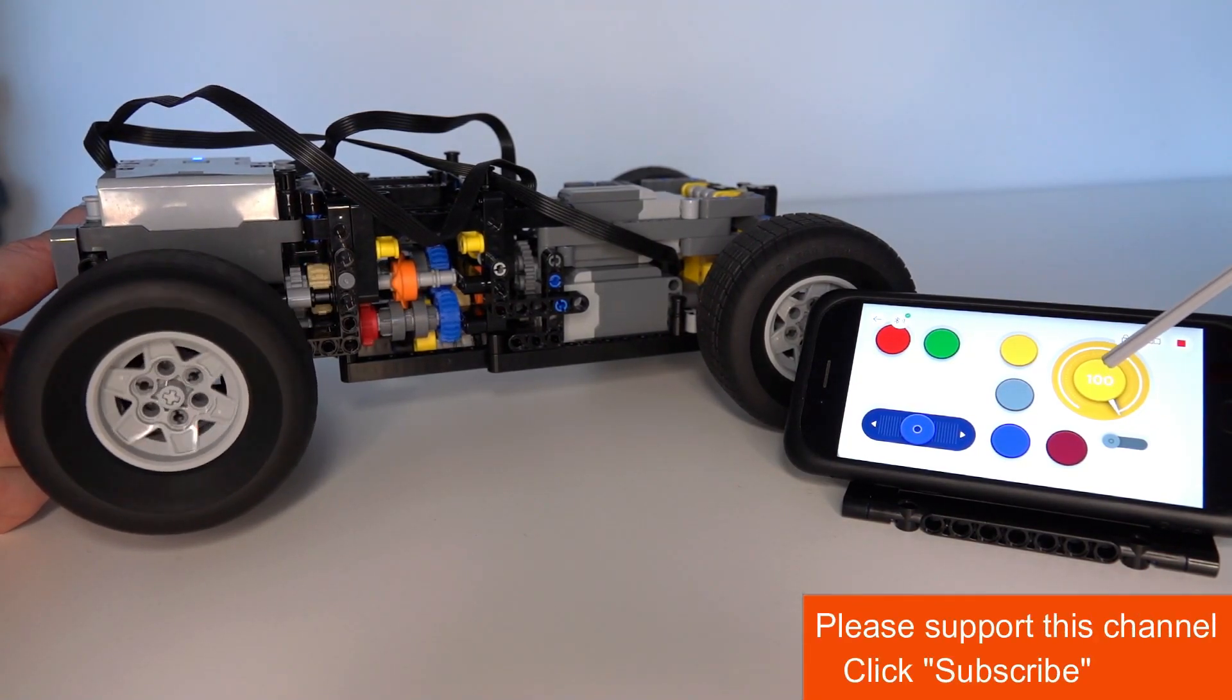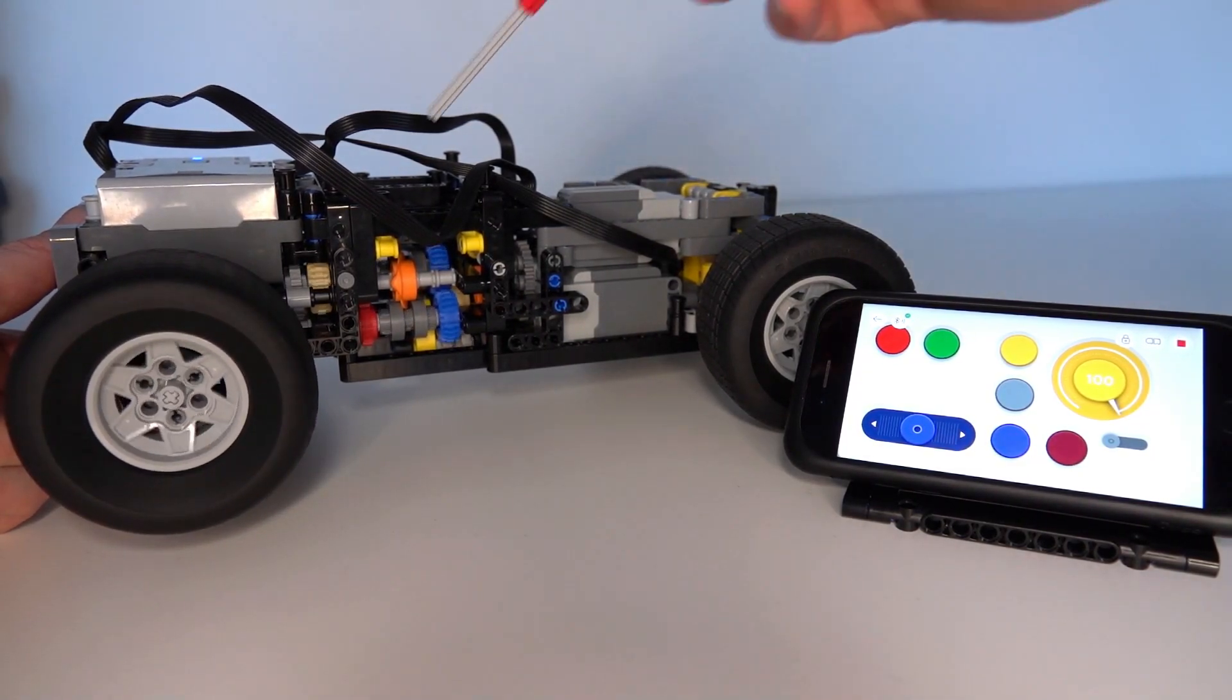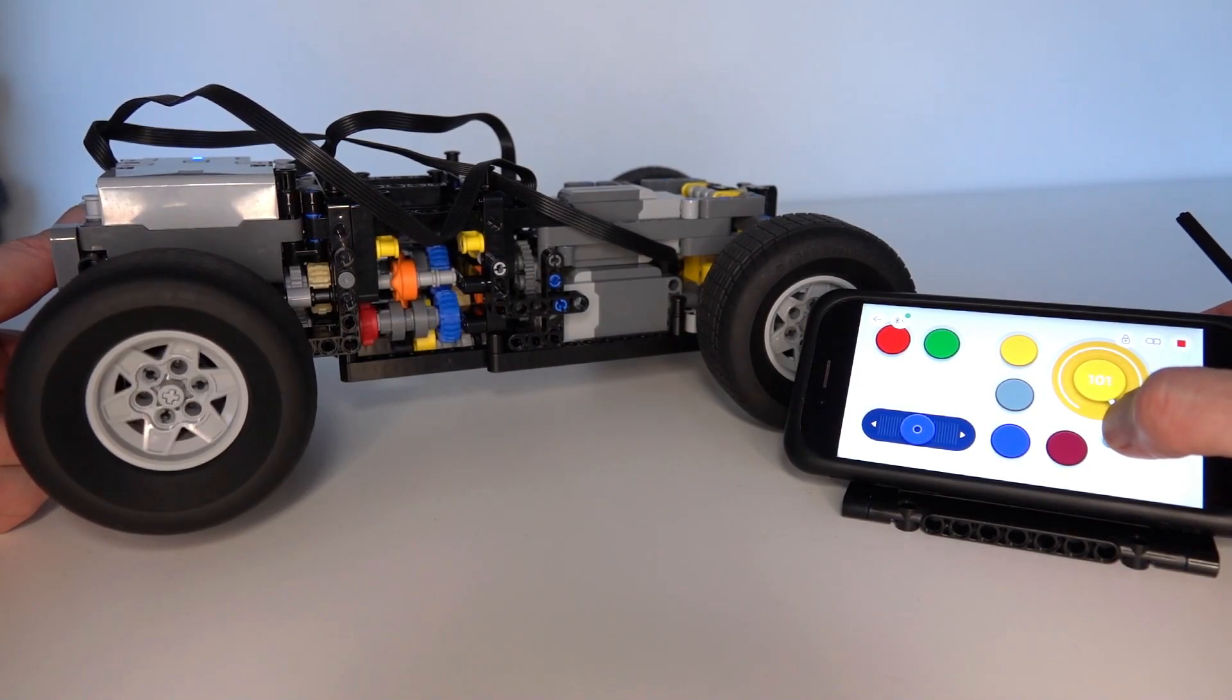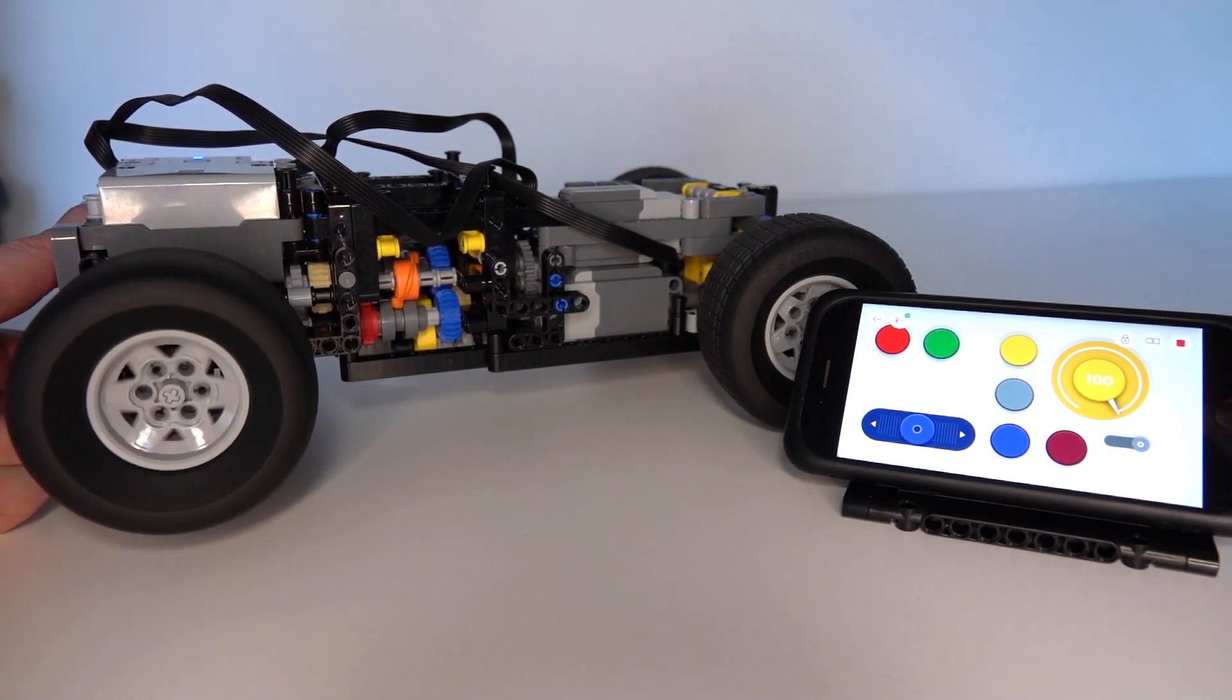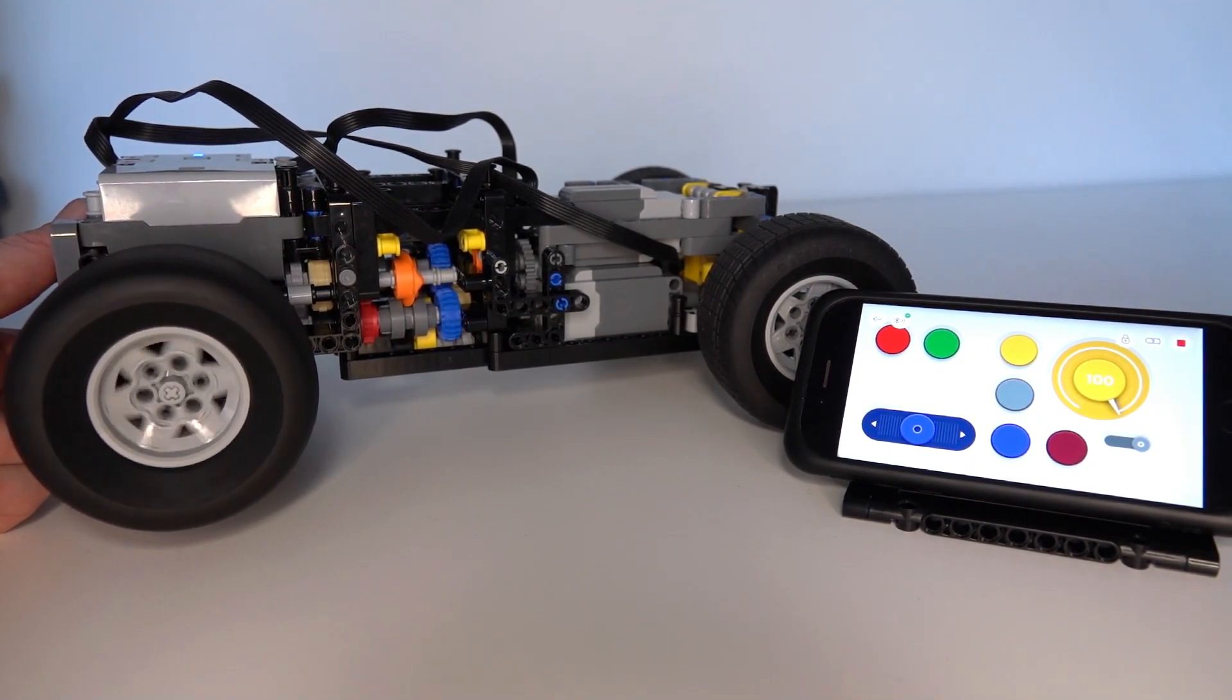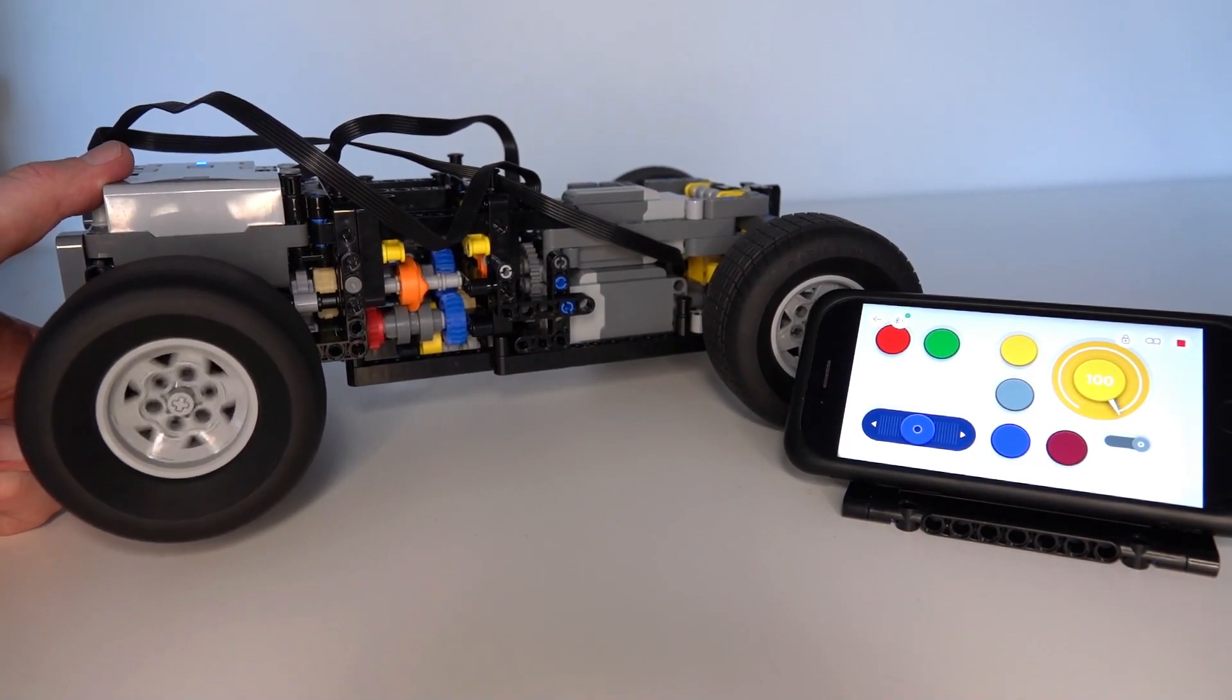As soon as I switch to automatic mode, it'll detect there's very little loading on the wheels, switch to gear two, and then subsequently automatically switch to gear three. Just watch that orange rotary catch. We'll go to automatic mode now—there we go, gear two and subsequently to gear three. Because there's no loading we're now in the highest gear.